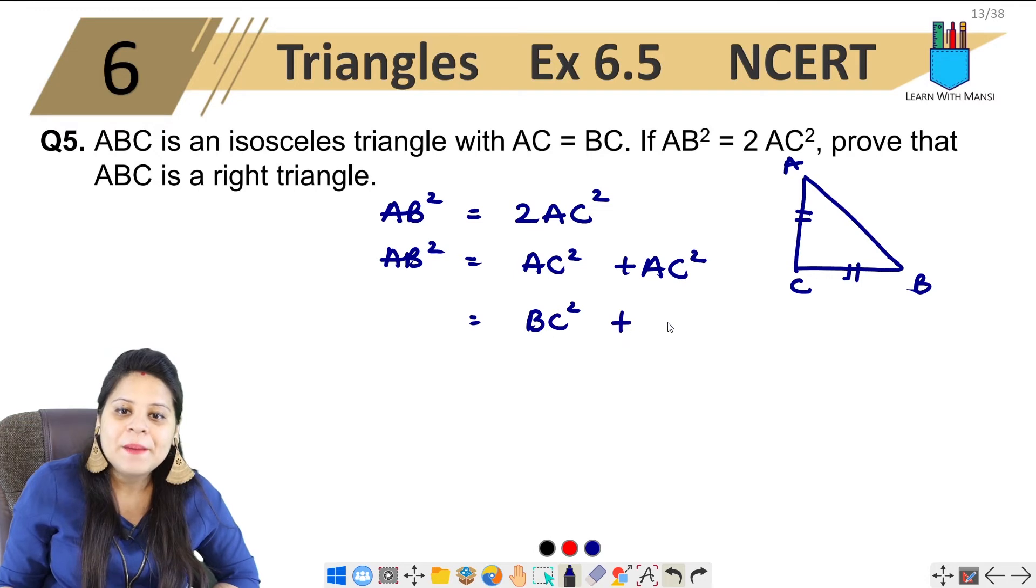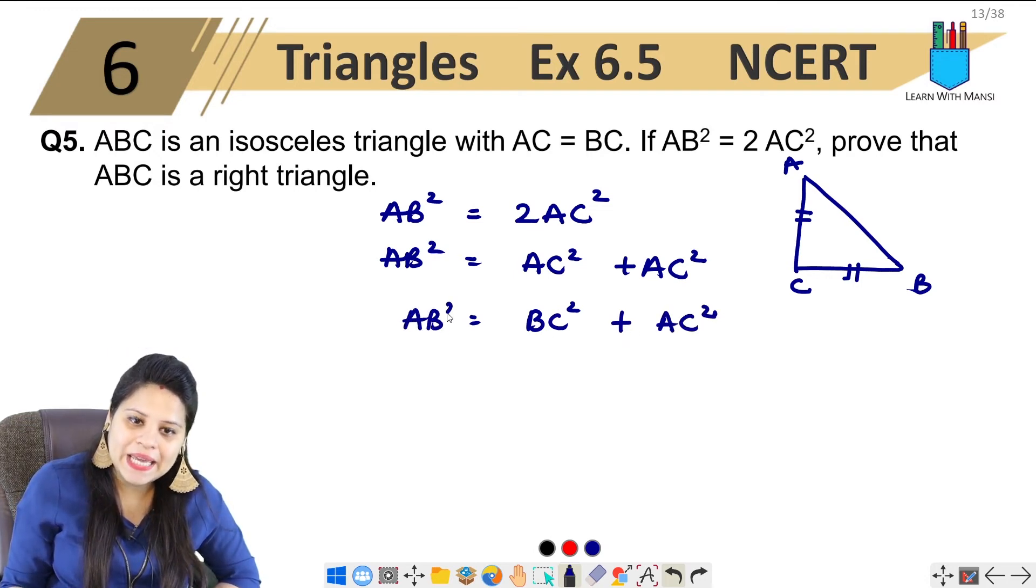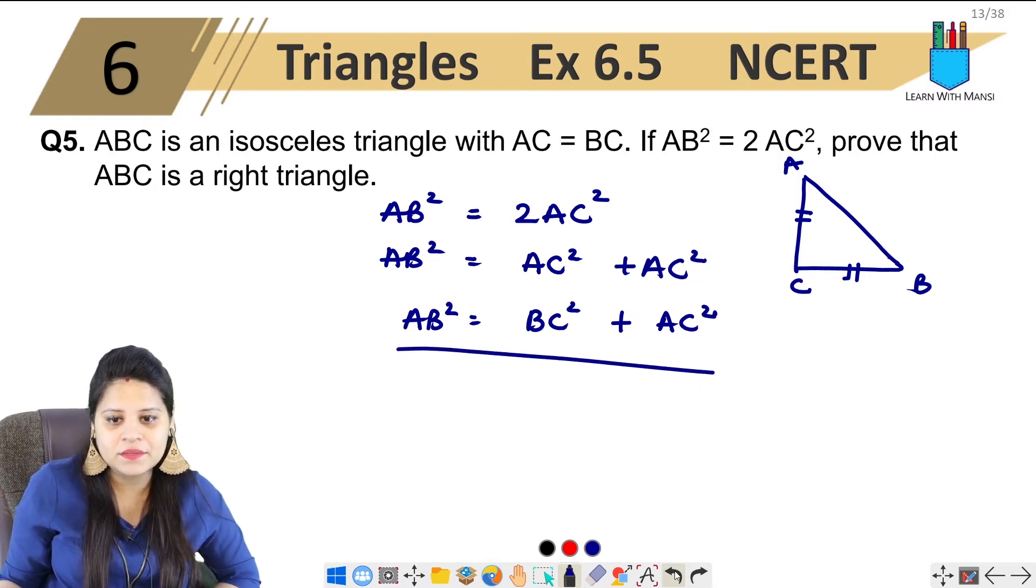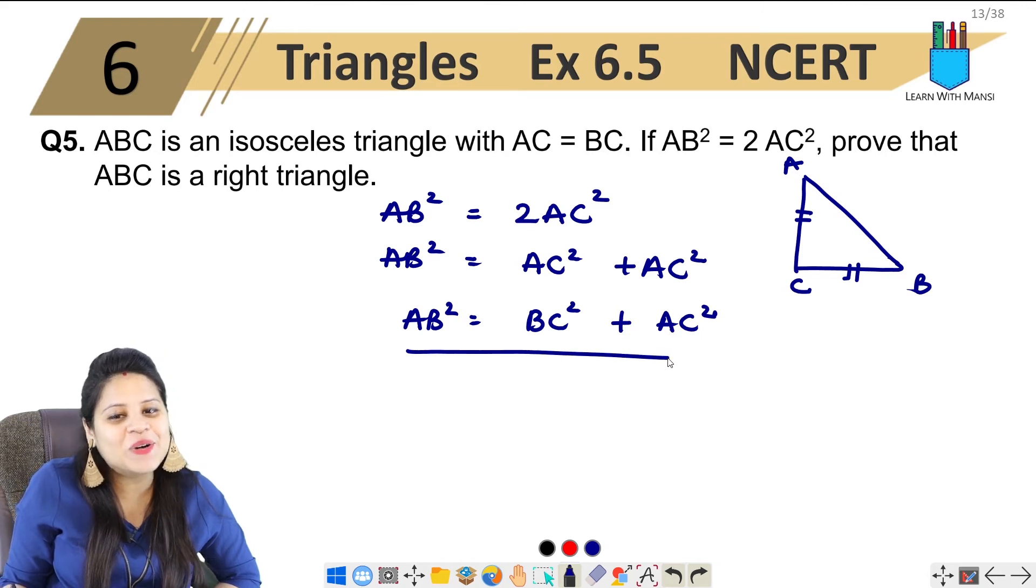So BC square plus AC square equal to AB square. So here is my Pythagoras theorem.